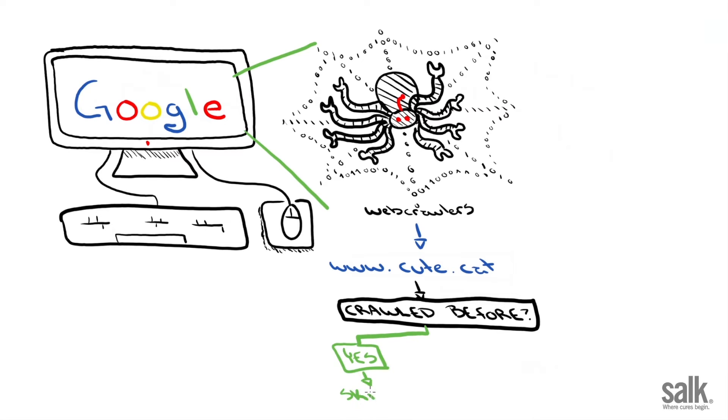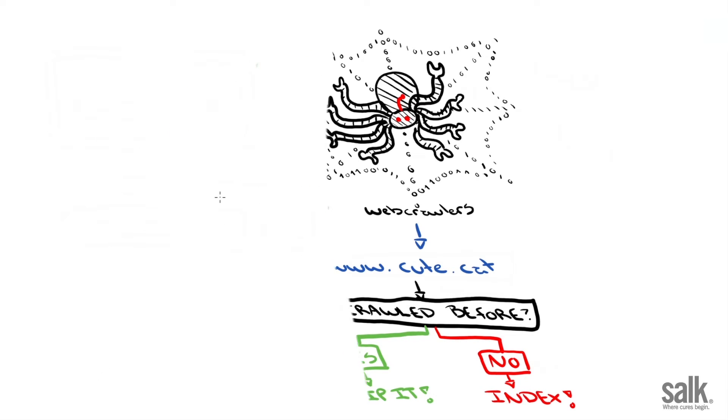If so, then it could skip it and move on. But if not, in other words, if it's novel, then it goes in and does its thing. But how does Google solve novelty detection?